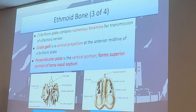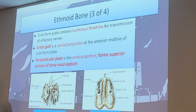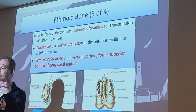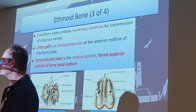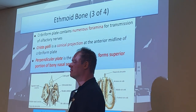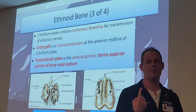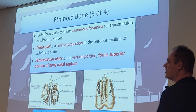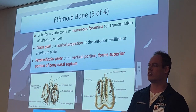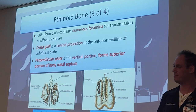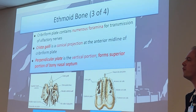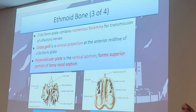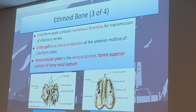The cribriform plate contains multiple small foramina for transmission of the olfactory nerves - those nerves in your brain that control your sense of smell go through that cribriform plate. The crista galli is that horn sticking out the top of the ethmoid bone - it's a conical projection at the anterior midline of the cribriform plate, and it's just a connection point. The perpendicular plate - also called the vertical portion - forms the superior portion of the bony nasal septum.